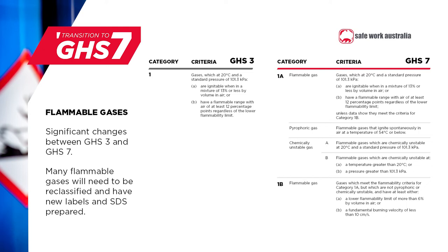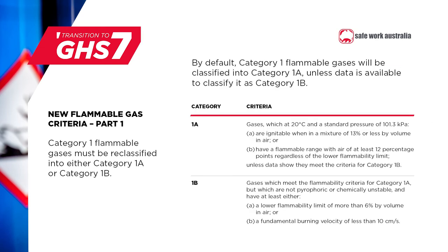While the existing Category 1 is roughly equivalent to the new Category 1a, the extent of these changes means that many flammable gases will need to be reclassified and have new labels and safety data sheets prepared. A Category 1a flammable gas is a gas which, at standard temperature and pressure of 20°C and 101.3 kPa, is ignitable at 13% or less in air, or has a flammable range in air of at least 12% regardless of the lower flammability limit. A Category 1b is a gas which meets the flammability criteria for Category 1a but which is not pyrophoric or chemically unstable and has either a lower flammability limit of more than 6% or a fundamental burning velocity of less than 10 cm per second.